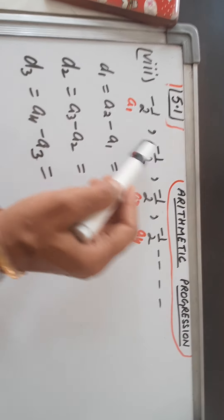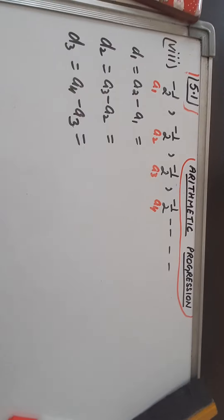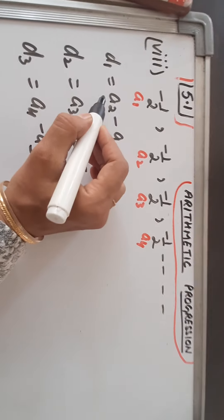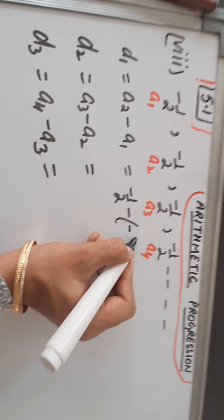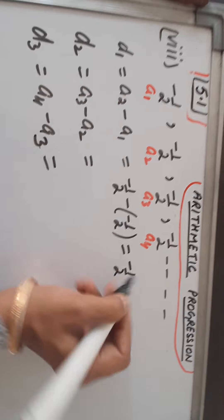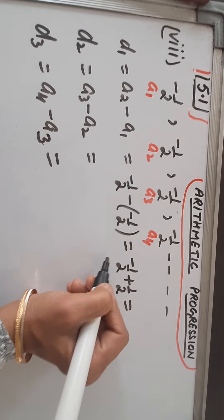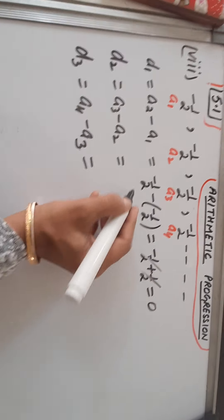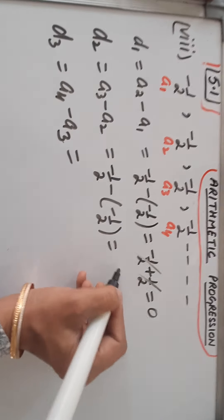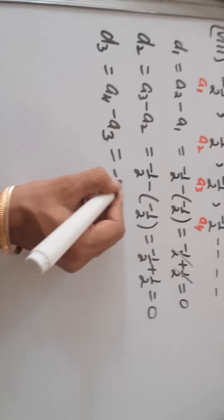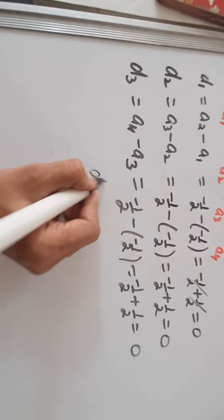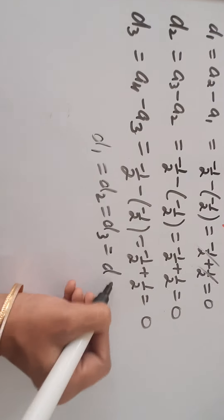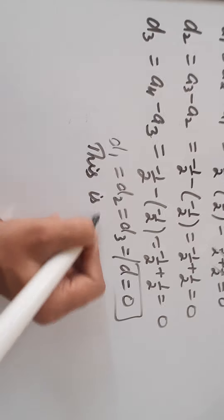Now let me solve this fraction series. It is given: first term -1/2, second term -1/2 — all the terms are the same. Let us check whether this is an AP. A2 minus A1: -1/2 minus (-1/2) gives -1/2 plus 1/2, which cancel out, giving 0. Similarly in each case, because all values are the same, all differences will be 0. So D1 equals D2 equals D3 and the common difference is 0.